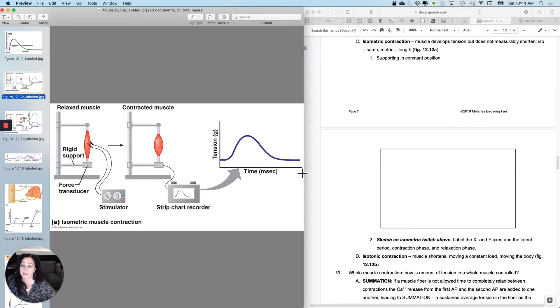It's going to generate tension, but it's not going to generate any movement. Because the origin and the insertion of the muscle or the muscle fiber did not move any closer to one another. Is it still using ATP? It is, right? But the tension didn't overcome the load. So you can sketch an isometric twitch here.